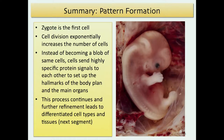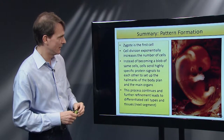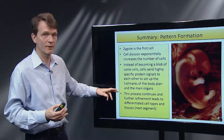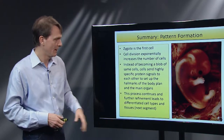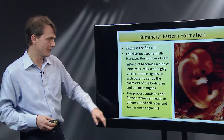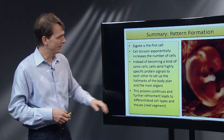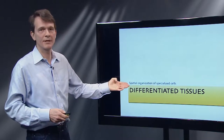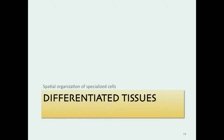Let's summarize pattern formation. The zygote is the first cell. Cell division of the developing embryo exponentially increases the number of cells. Instead of becoming a blob of like cells, cells — depending on their position — send highly specific protein signals to each other to set up the hallmarks of the body plan and scaffold the main organs. That process continues, and further refinement leads to differentiated cell types and tissues. These differentiated cell types and tissues are the subject of the next segment: spatial organization of specialized cells.